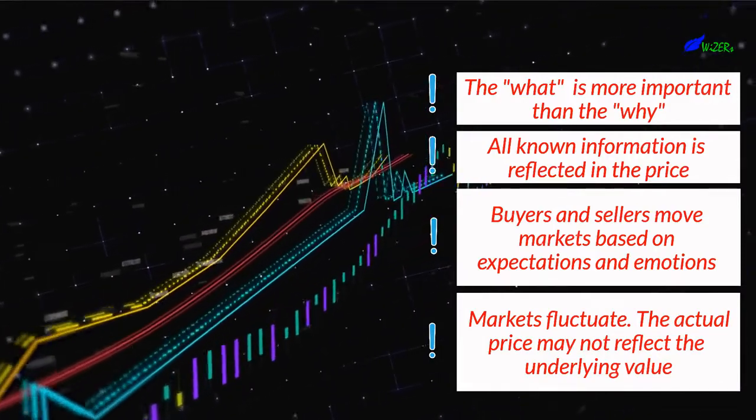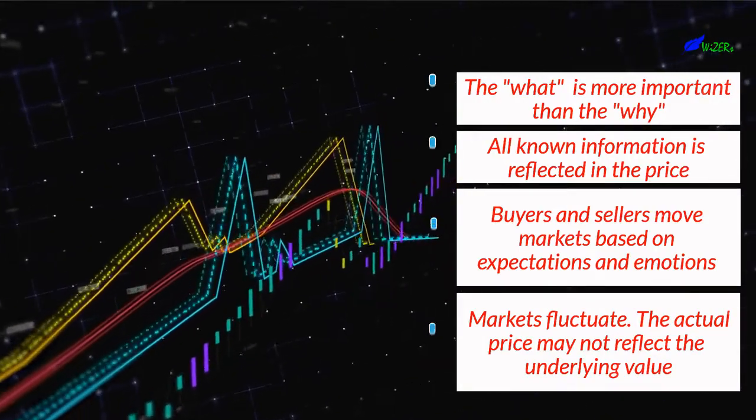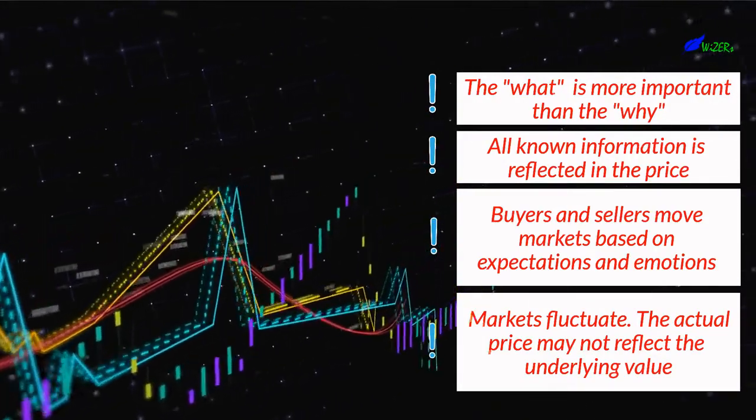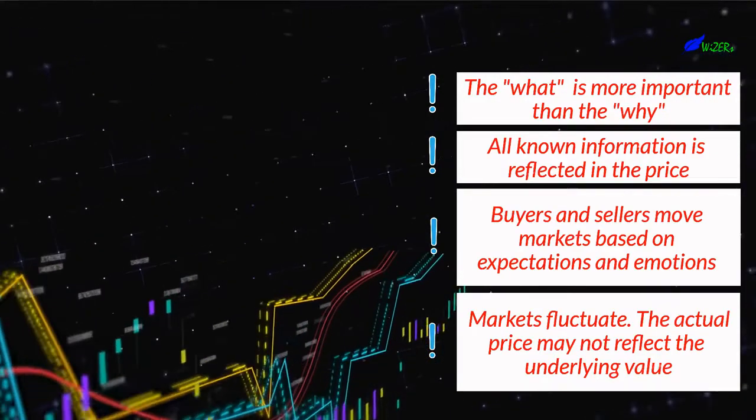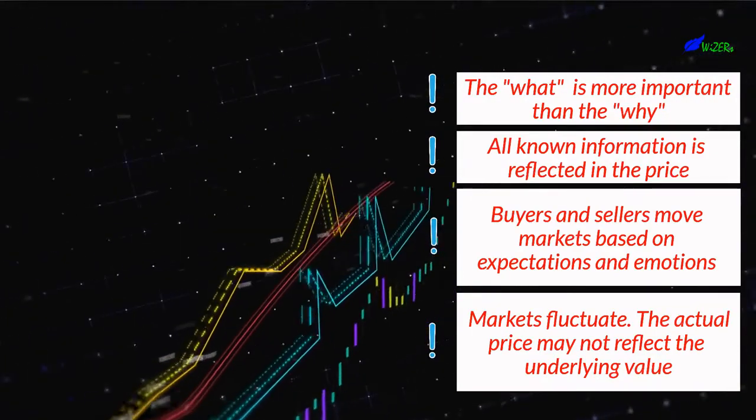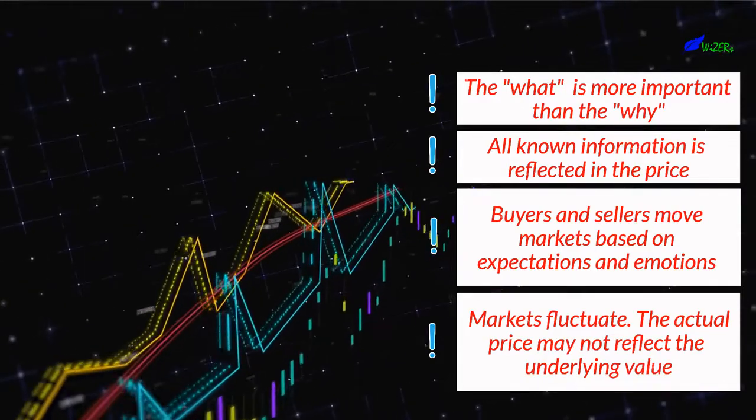All known information is reflected in the price. Buyers and sellers move markets based on expectations and emotions, fear and greed. Markets fluctuate. The actual price may not reflect the underlying value.